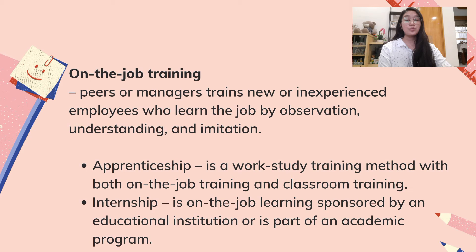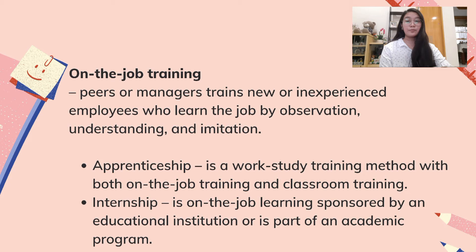On-the-job training (OJT) is where peers or managers train slow or inexperienced employees who learn the job by observation, understanding, and imitation. It has two types. First, apprenticeship is a work-study training method with both on-the-job training and classroom training — trainees can earn while training for their specialized jobs, and programs are typically for mechanics, electricians, welders, food preparation, etc. It can last four to five years or until the trainee becomes an expert. One disadvantage is that the trainee may not be flexible enough to adopt new skills in other workplaces since they only learned a specific skill set. Second, internship is on-the-job learning sponsored by an educational institution or part of an academic program, where students are placed in positions related to their area of study.